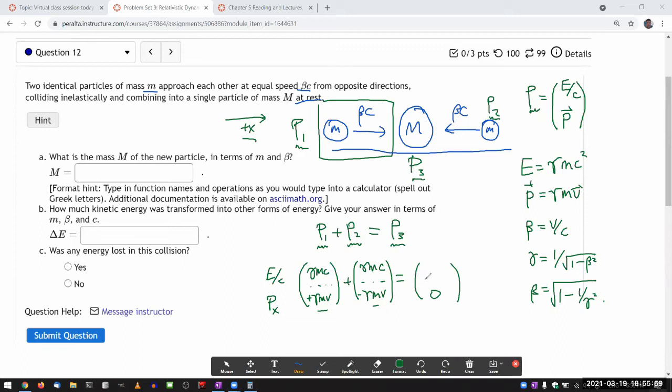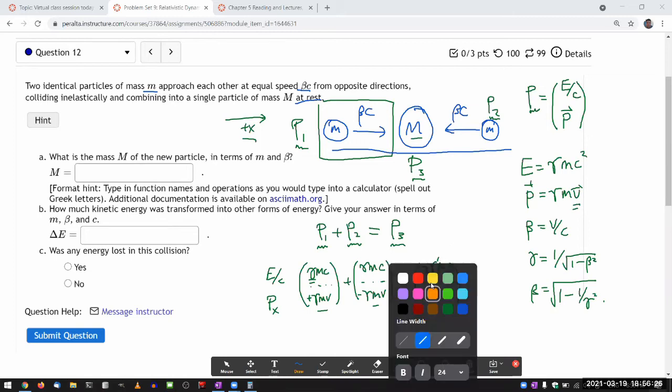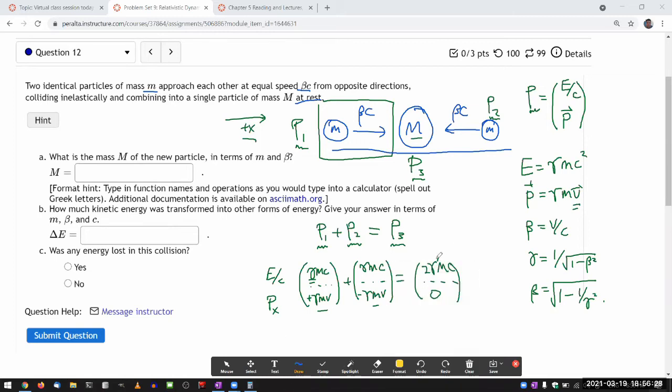For the energy or the time component, it will be two gamma—oh, I have to be careful here. Let me say gamma prime mc. The thing to be careful here is that this gamma is always associated with the speed of the particle that's moving, and how fast these particles are moving and how fast this particle is moving are different.